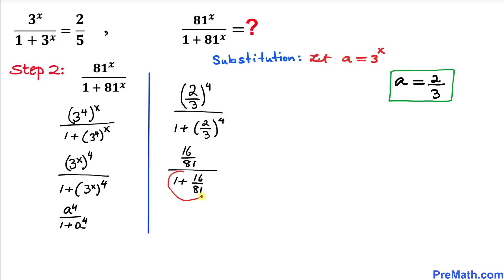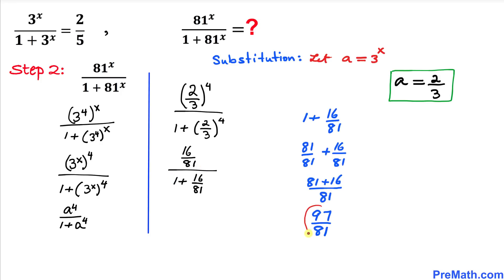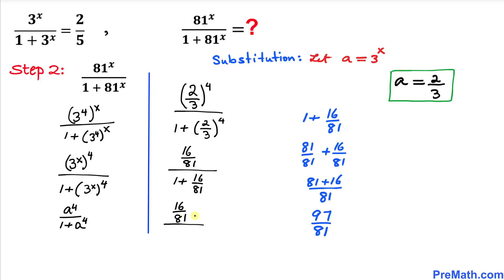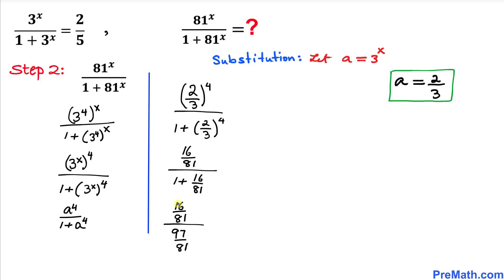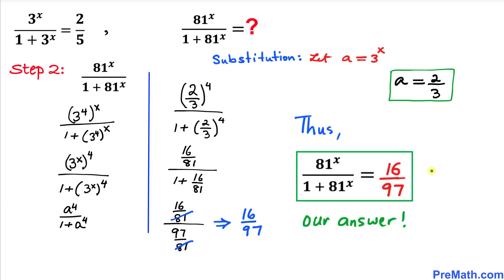Focusing on the denominator: 1 + 16/81 simplifies to 97/81. So we have 16/81 divided by 97/81. The 81s cancel out, and we simply get 16 divided by 97. Our simplified answer is 16/97.